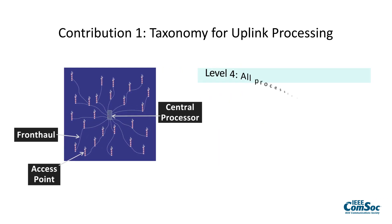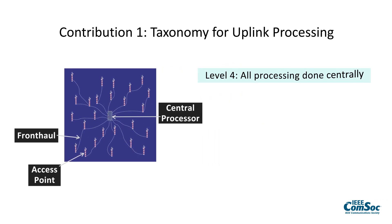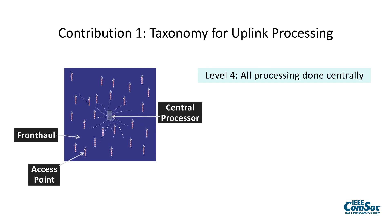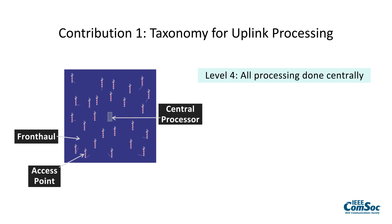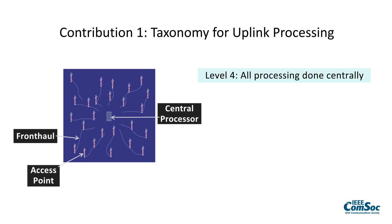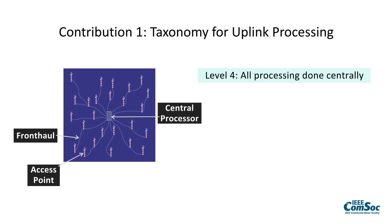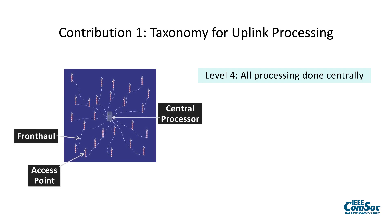At Level 4, which is the most advanced, every access point sends everything it knows over the fronthaul to the central processing unit, which puts it all together and operates the system in the best possible way.